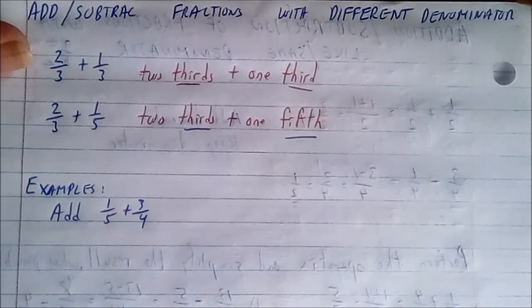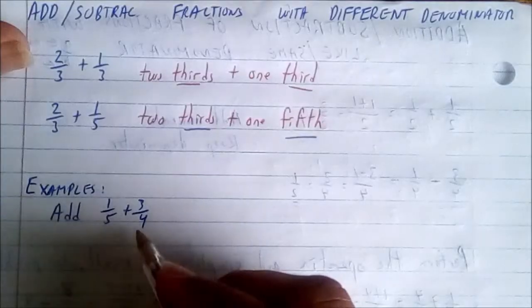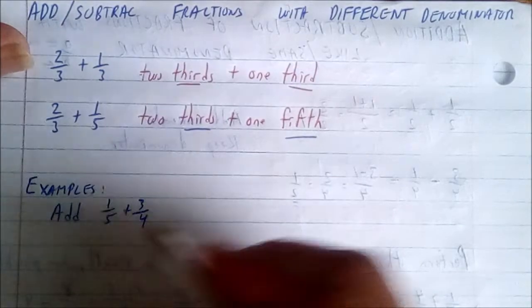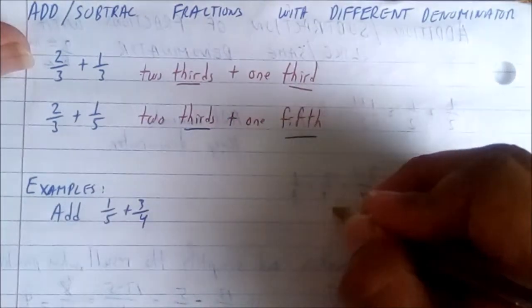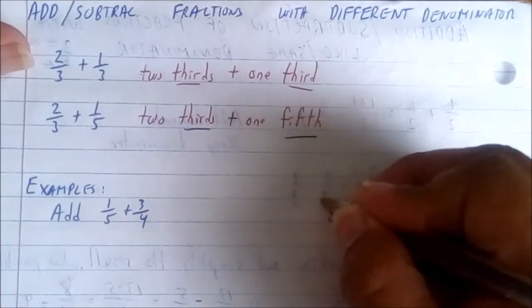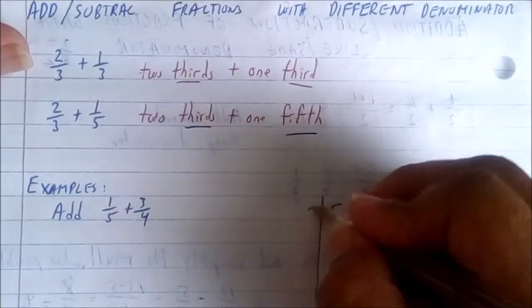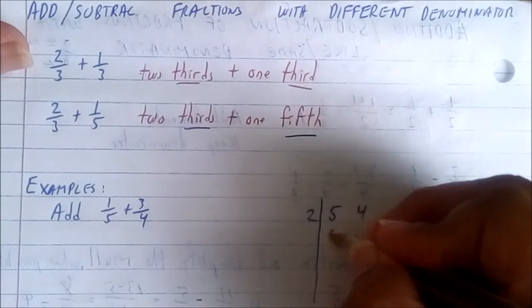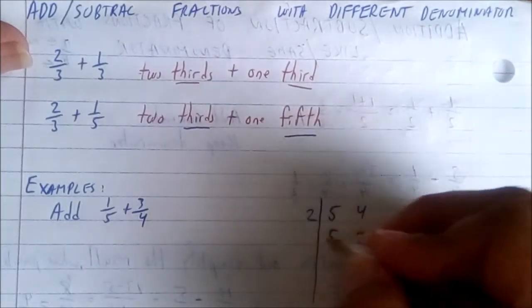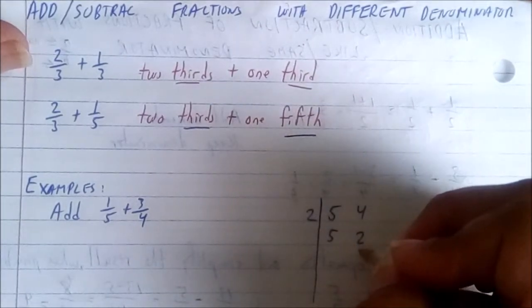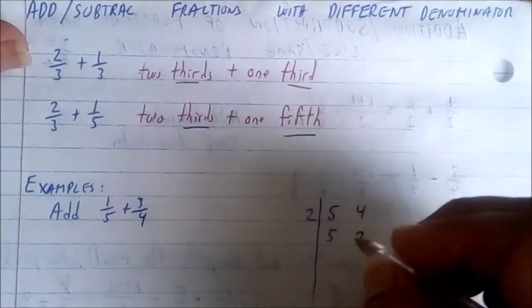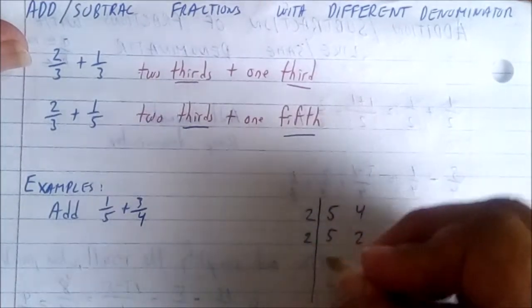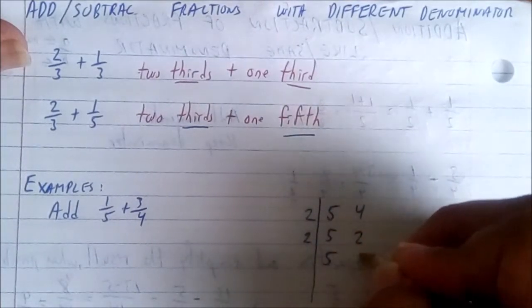So what you do is determine what is the LCD of five and four. Well, LCD is like this: five, four. Let's start the ladder method. Two into five can't go evenly, so therefore two into four is two, bring down the five. Two into five can't go, so bring that down and this becomes one.